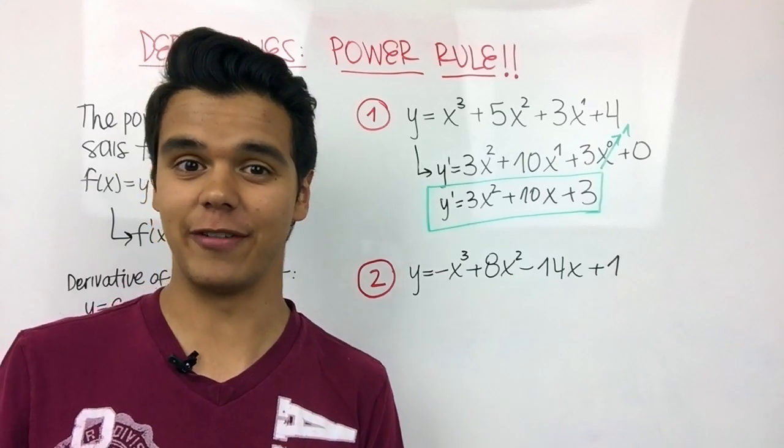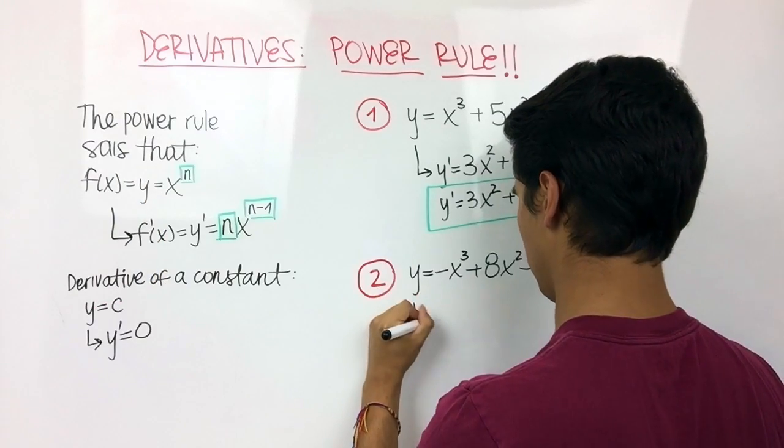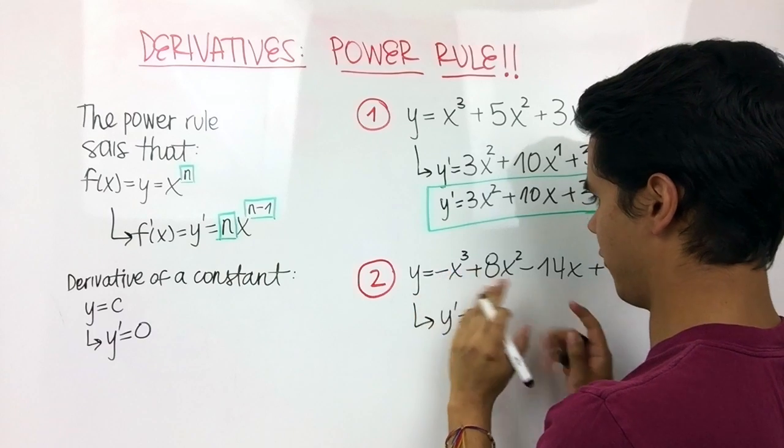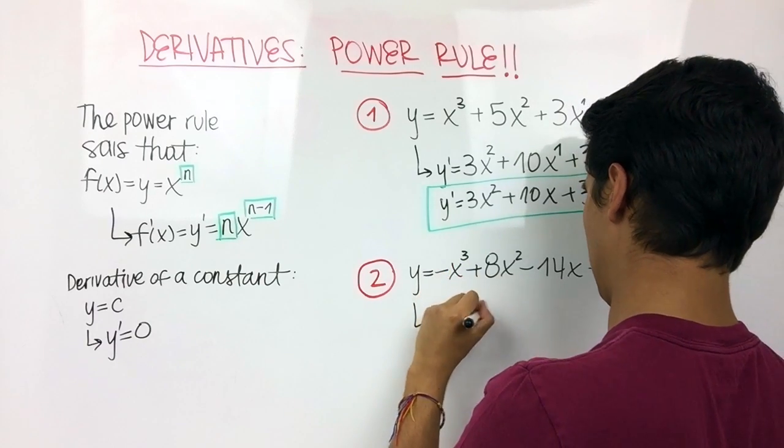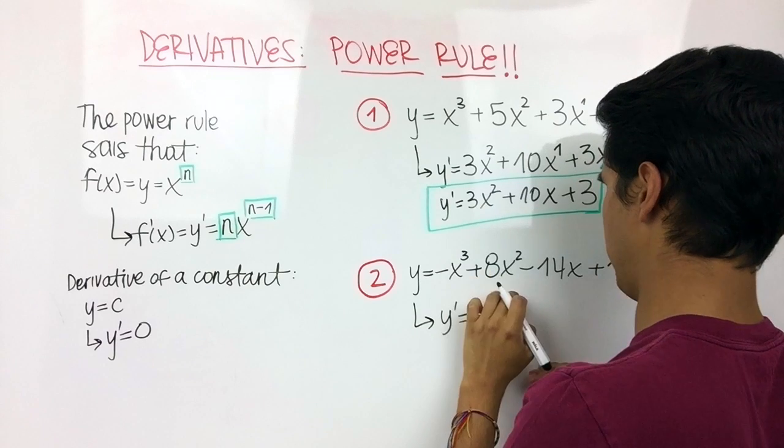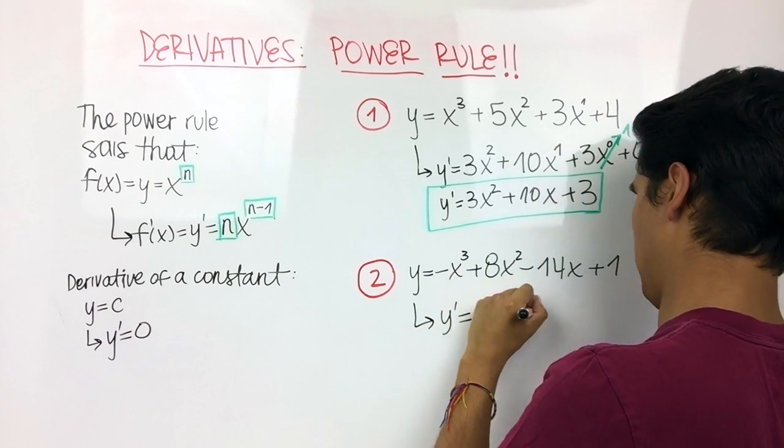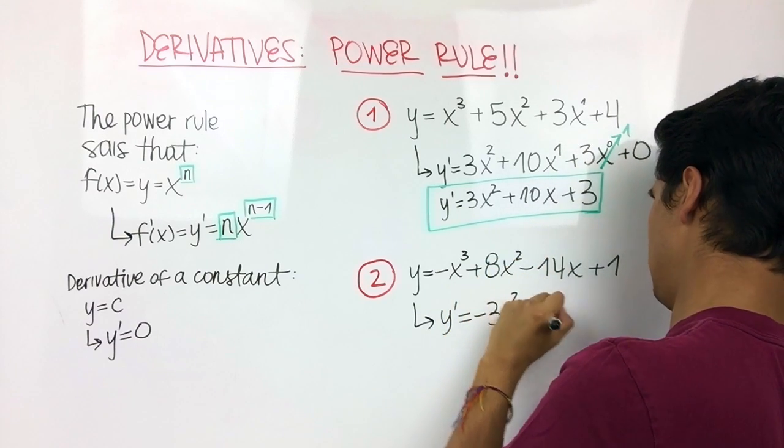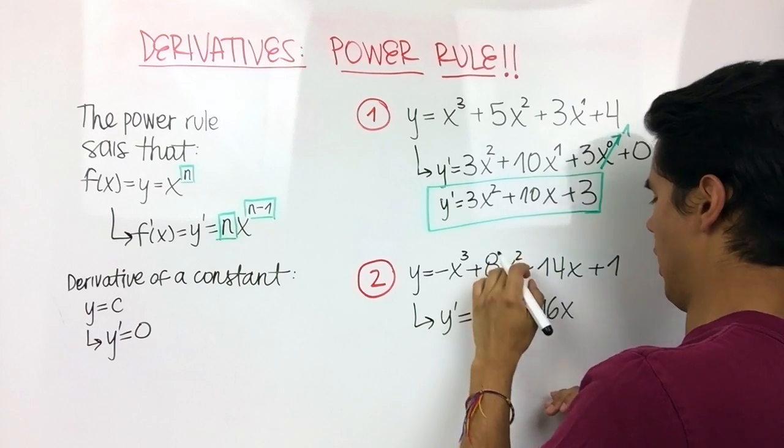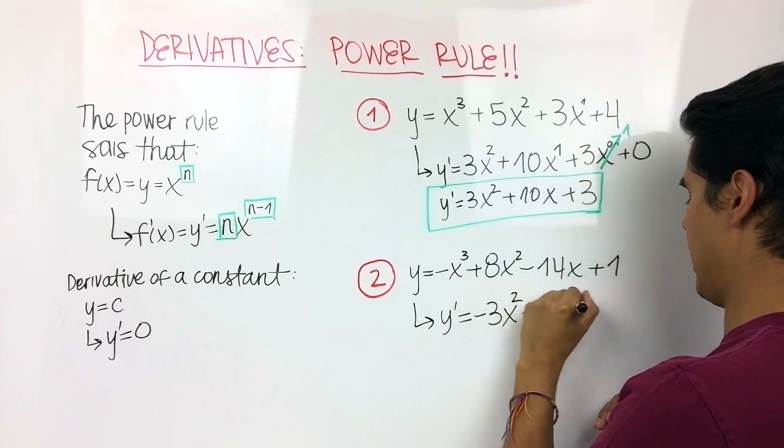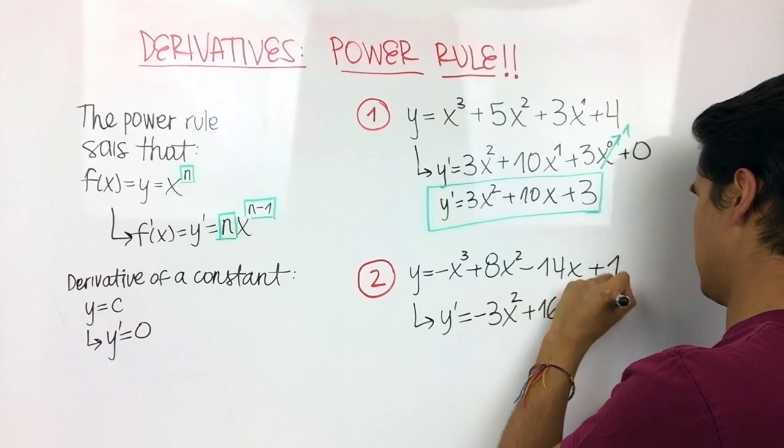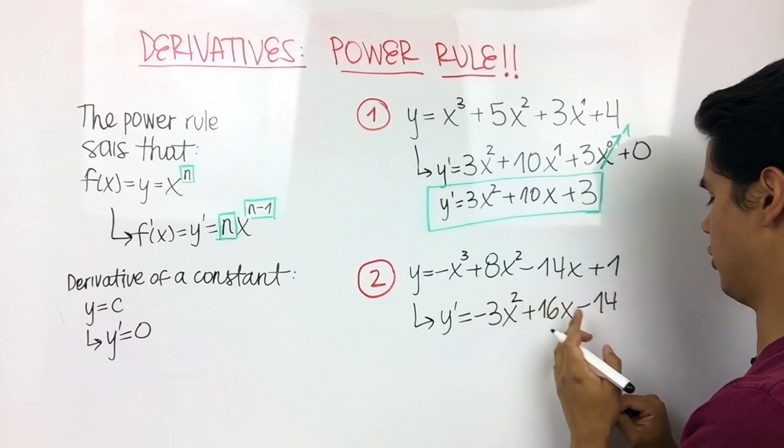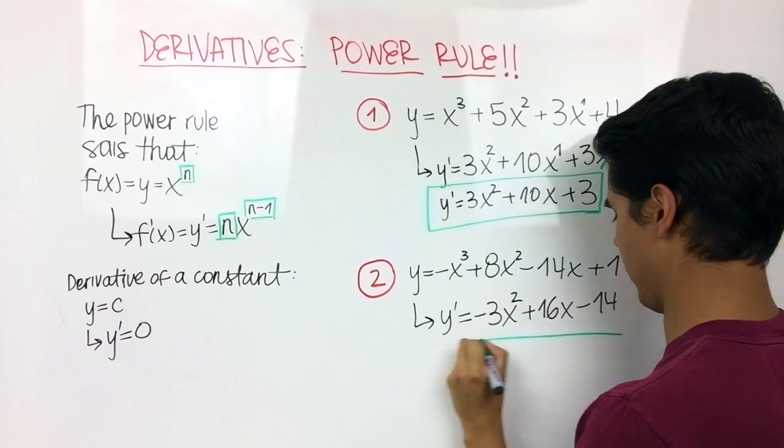Now for our second example, we have that function. Let's take its derivative. The derivative of this function, which is y prime, is going to be equal to—we have a negative in here and we're not going to forget about it. So negative 1 times 3 would be negative 3x raised to the power of 3 minus 1, which is 2. Plus we have an 8 here, so we multiply this 8 by this 2, so we have 16x to the power of 1. I'm not going to write the 1 down. Minus 14, and we forget about this x, and we don't take the derivative of a constant because it's going to be equal to 0. And this would be our derivative.